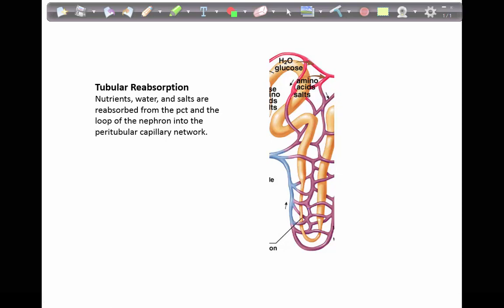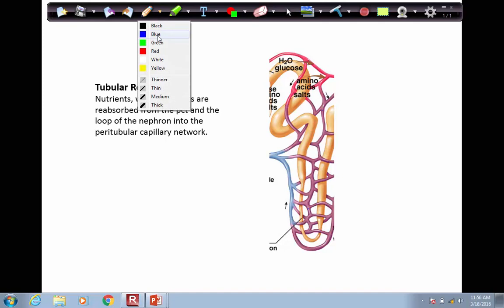To summarize, tubular reabsorption involves the PCT or proximal convoluted tubule, as well as the loop of the nephron. It also involves blood vessels, the peritubular capillary network, which we can see around those tubules. Nutrients, water, and salts are reabsorbed from the proximal convoluted tubule and the loop of the nephron into the peritubular capillary network.